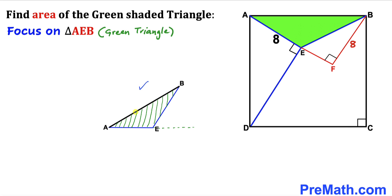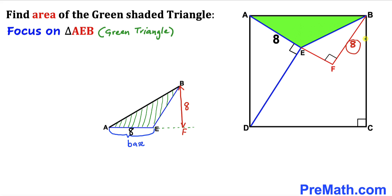Now let's focus on the green triangle AEB. Looking at this triangle, AE serves as the base and BF serves as the height. We know AE is 8 units and the height is 8 units.